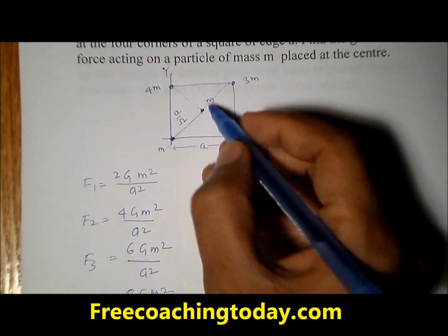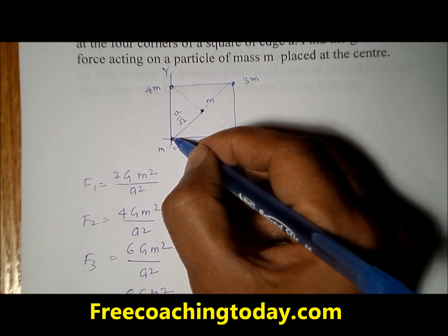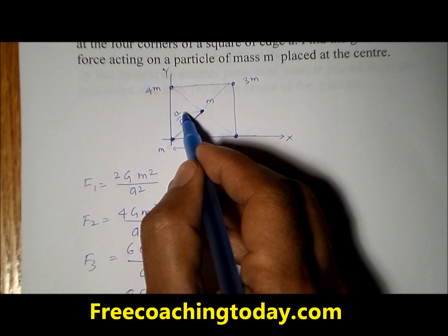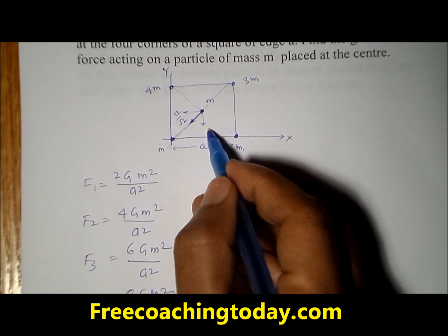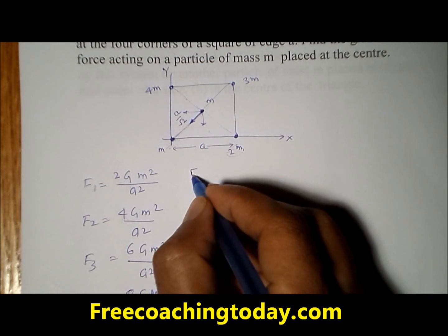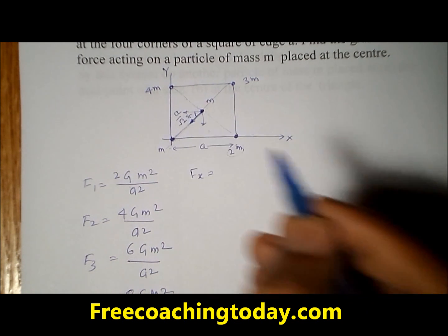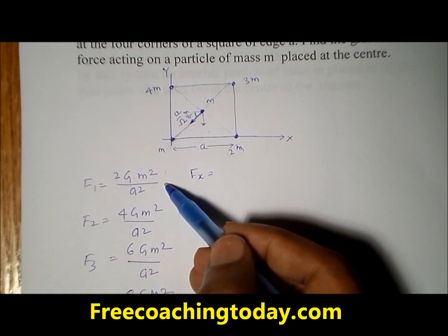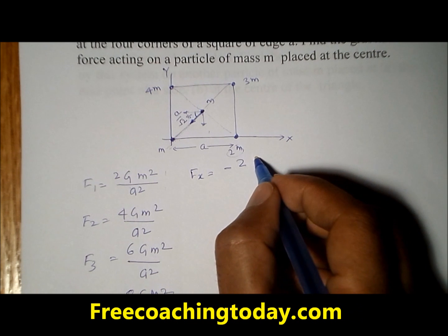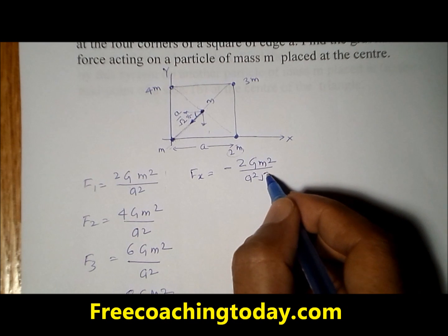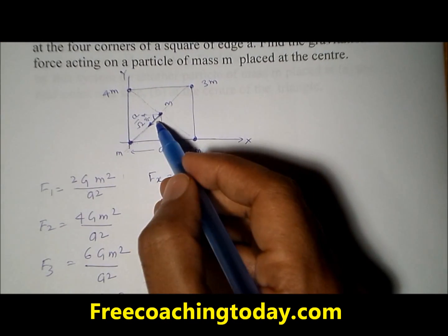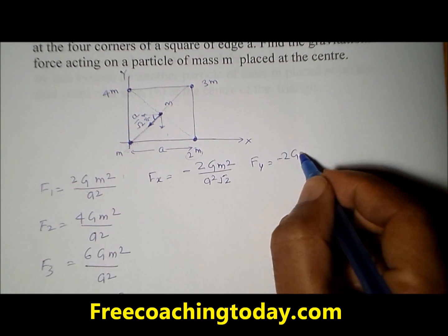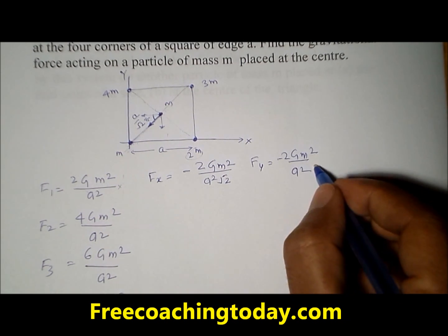Now we resolve each force into x and y directions. The force on the center particle due to the first particle is attractive, so it pulls toward that corner. Resolving F1: the angle is 45°, so the x-component is F1·cos45° = F1/√2, which is negative (negative x-direction), giving −2Gm²/(a²√2). The y-component is F1·sin45° = F1/√2, also negative, giving −2Gm²/(a²√2).